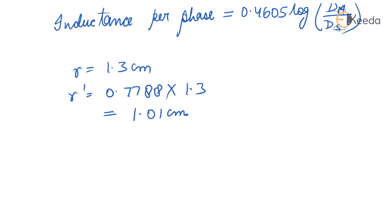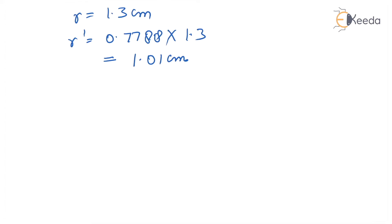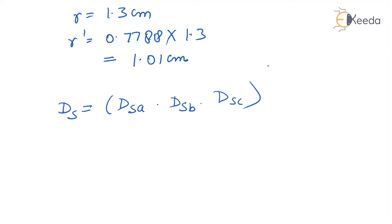Now, the self GMD — the equivalent self GMD of one phase — is given by Ds equals (DSa · DSb · DSc) to the power 1 by 3. Now we have to find out DSa, DSb, and DSc.